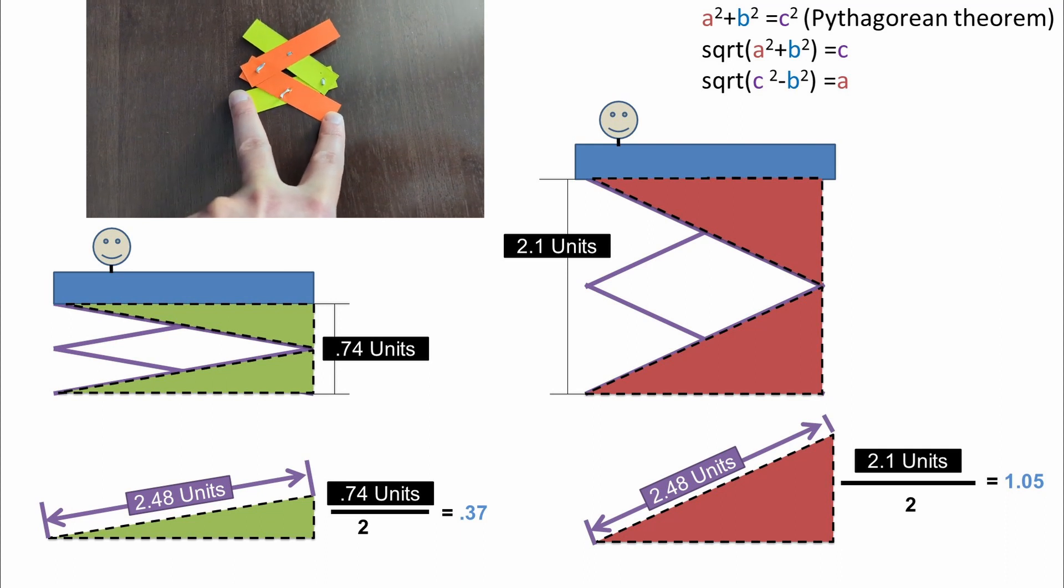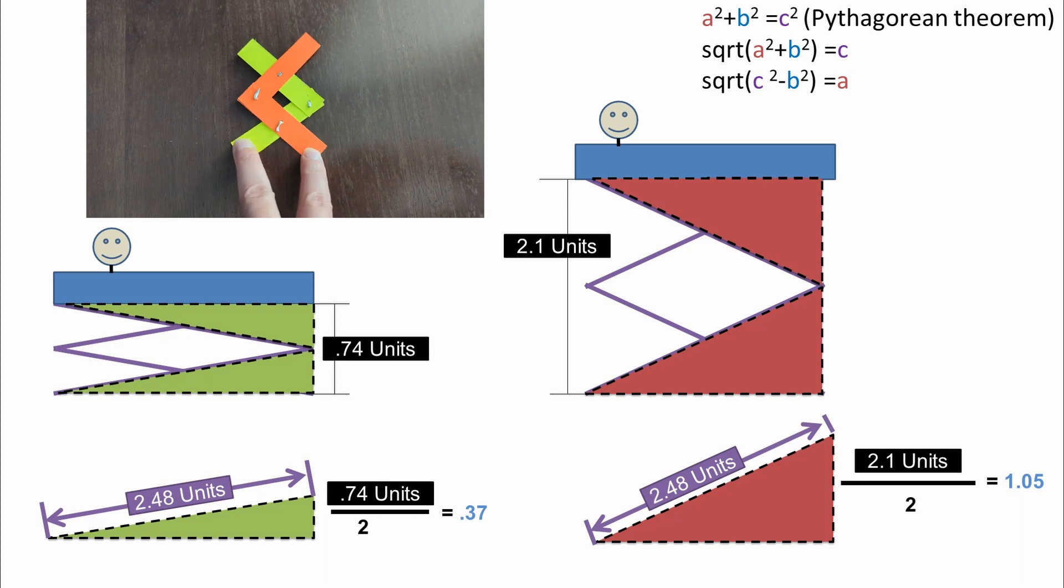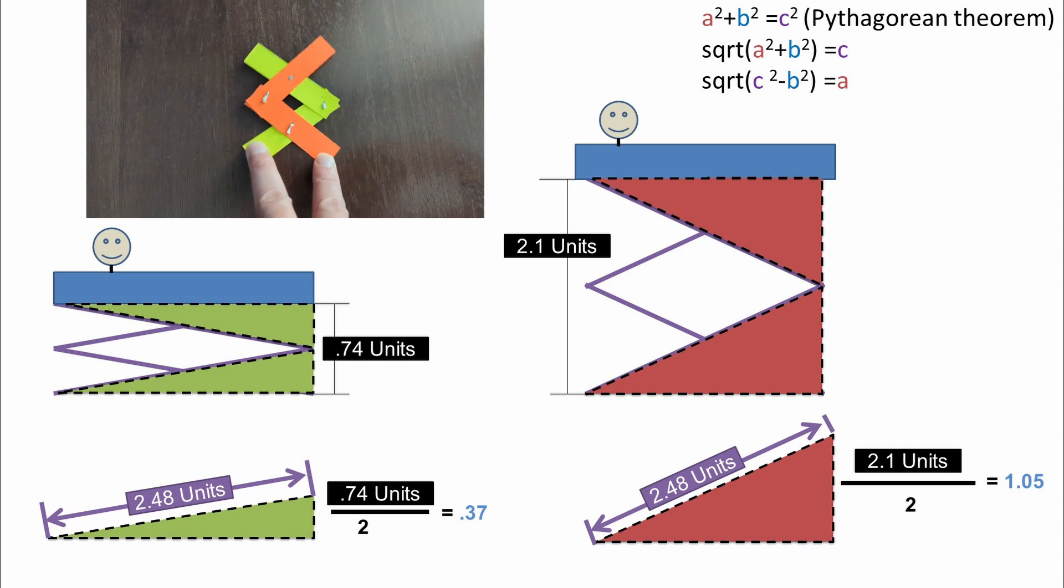We noticed that for each of these triangles, the height is half of the height of the scissor lift, which is 0.37 and 1.05.